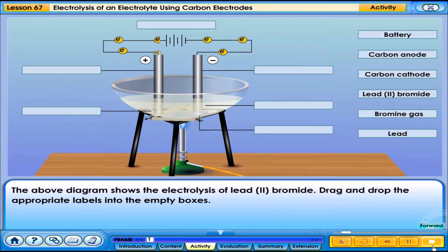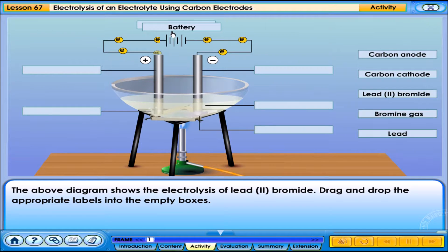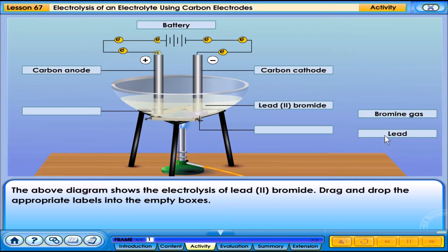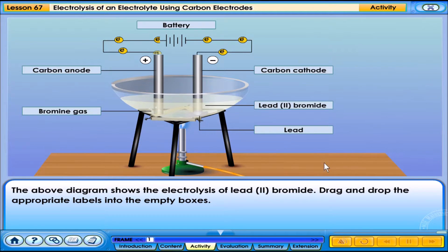The above diagram shows the electrolysis of lead-2-bromide. Drag and drop the appropriate labels into the empty boxes. All answers are correct.